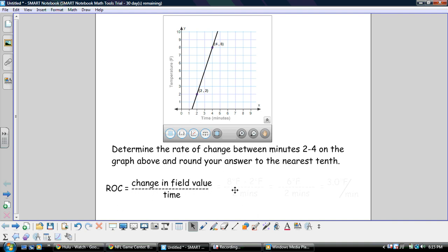So if we substitute our data into the problem, we come up with this. We simplify it, and we get 6 degrees Fahrenheit for every 2 minutes.